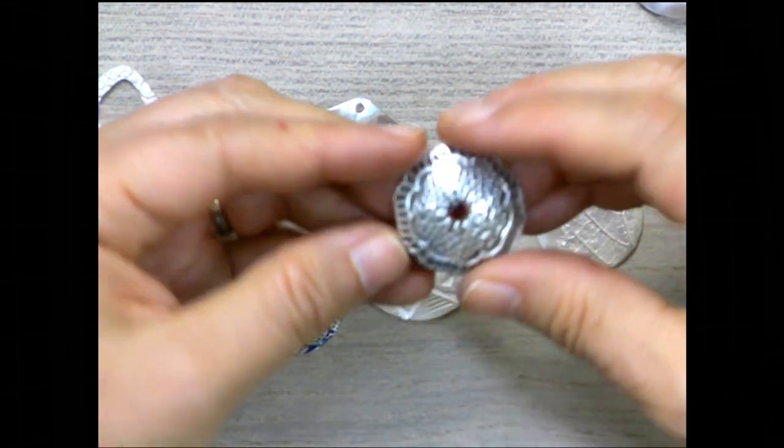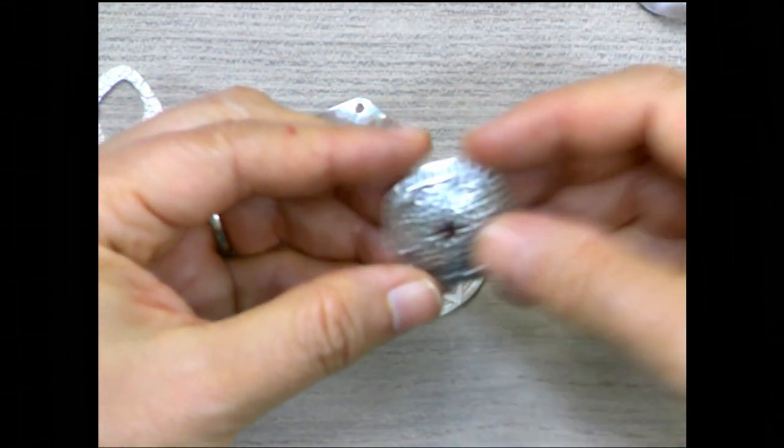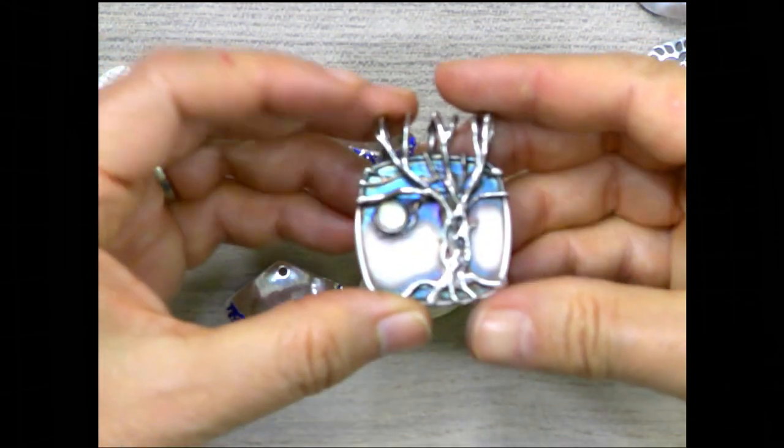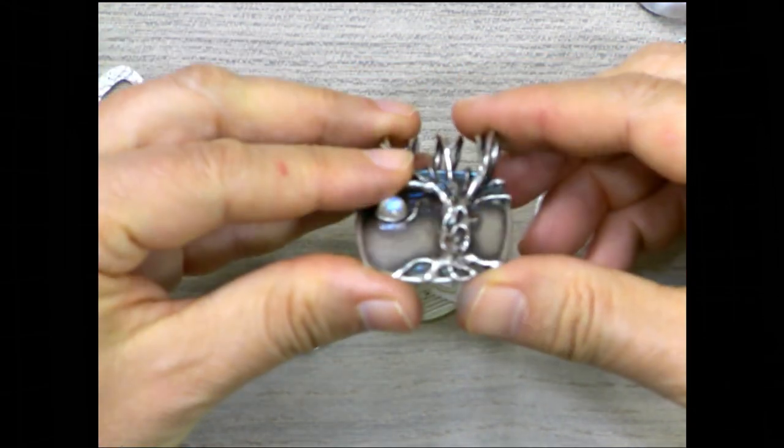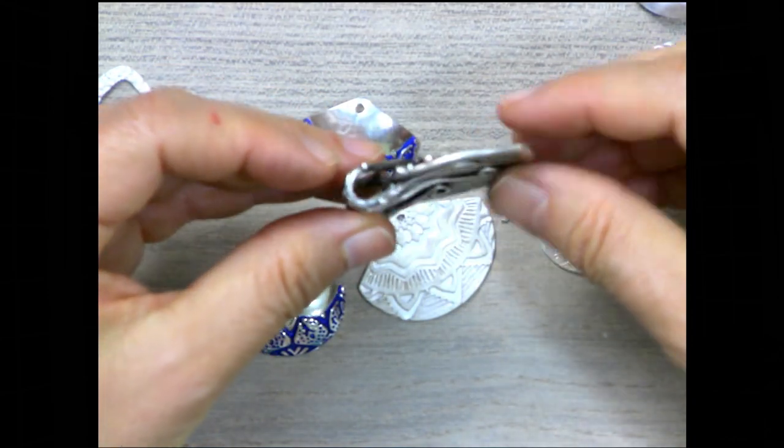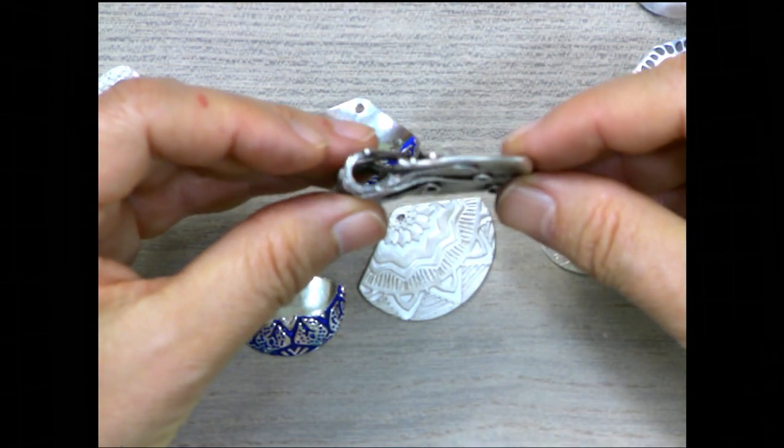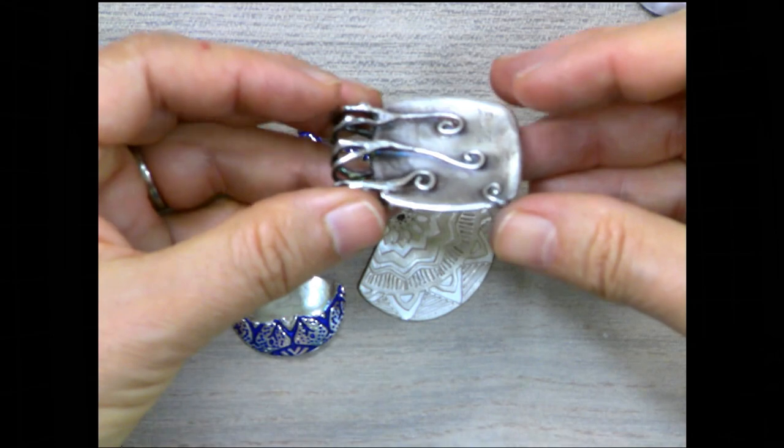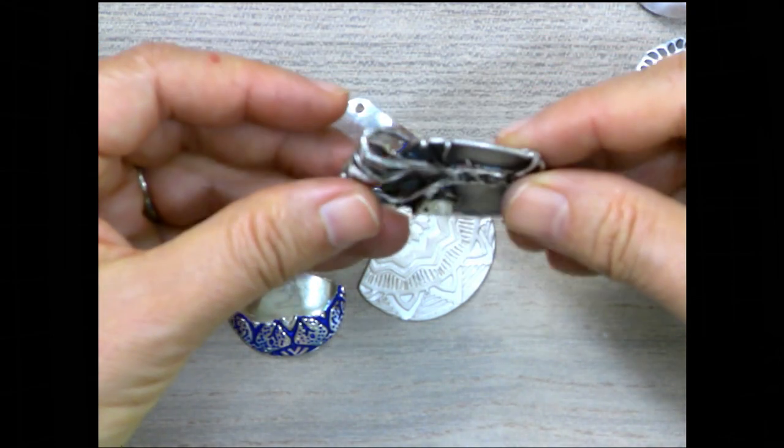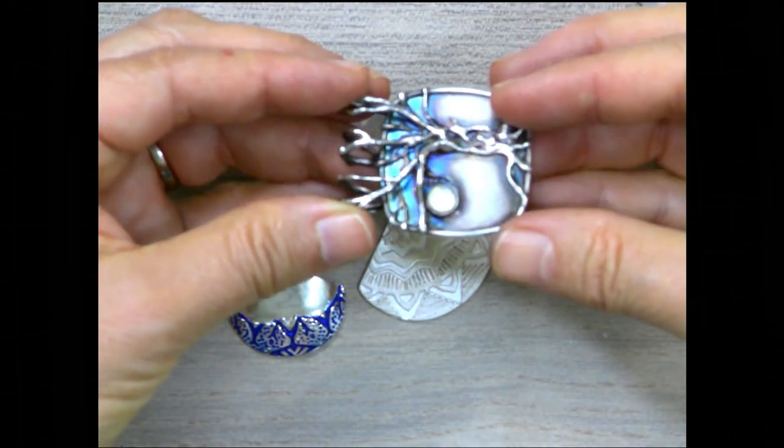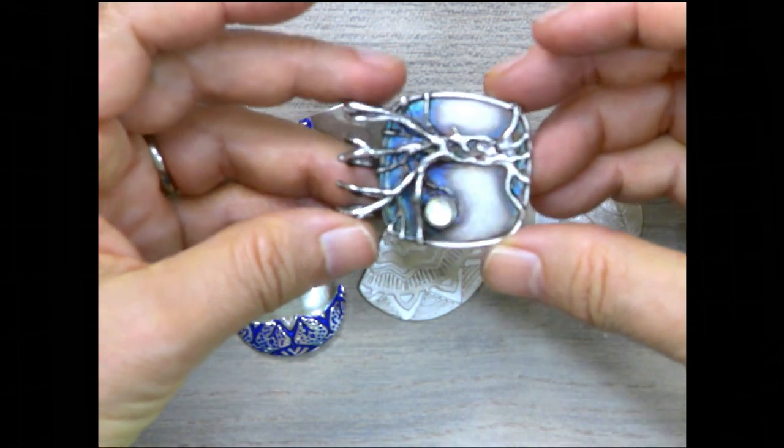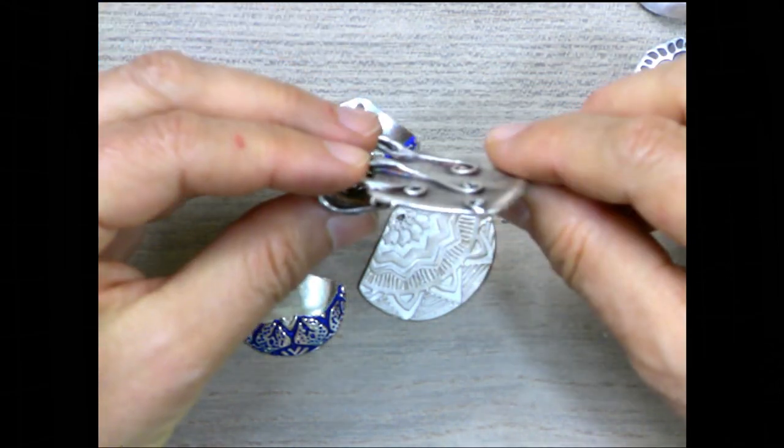So in these cases with stones or complicated designs, this one, everyone thinks it's flat, but it actually isn't. It does have a very slight curve to it and it does make it look better. But look at everything that's going on there. There would be no way to dome this after it's fired. So that slight curve happened before the piece was fired. And so in these cases, I'm going to dome the pieces while they're wet and then fire them.